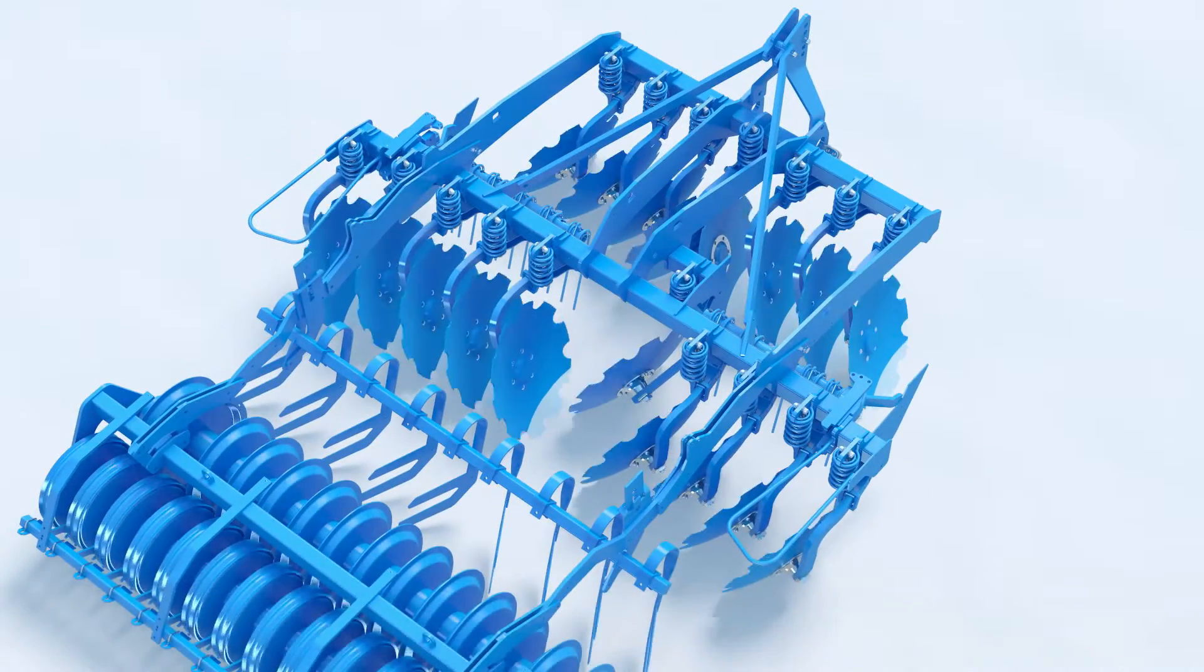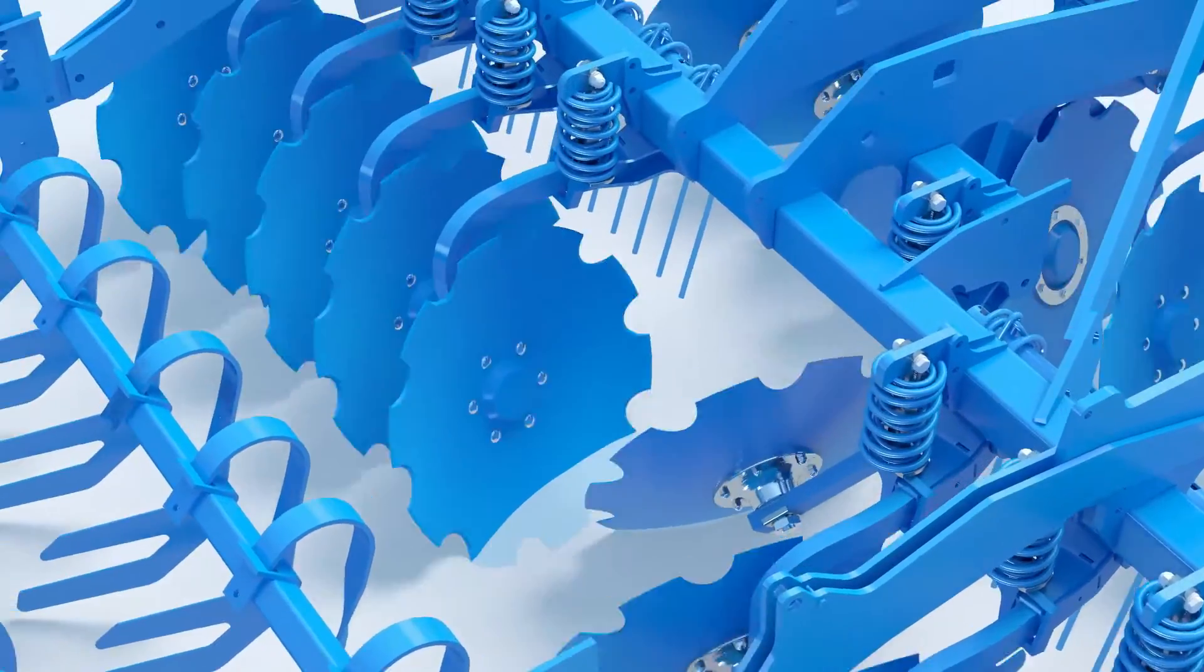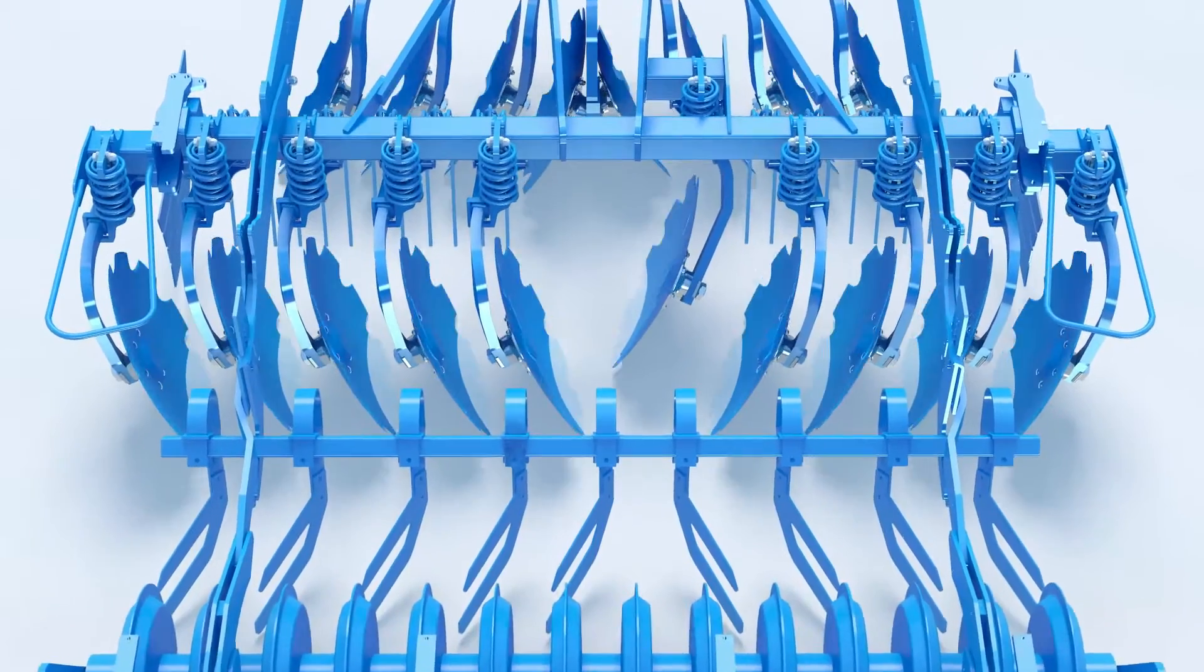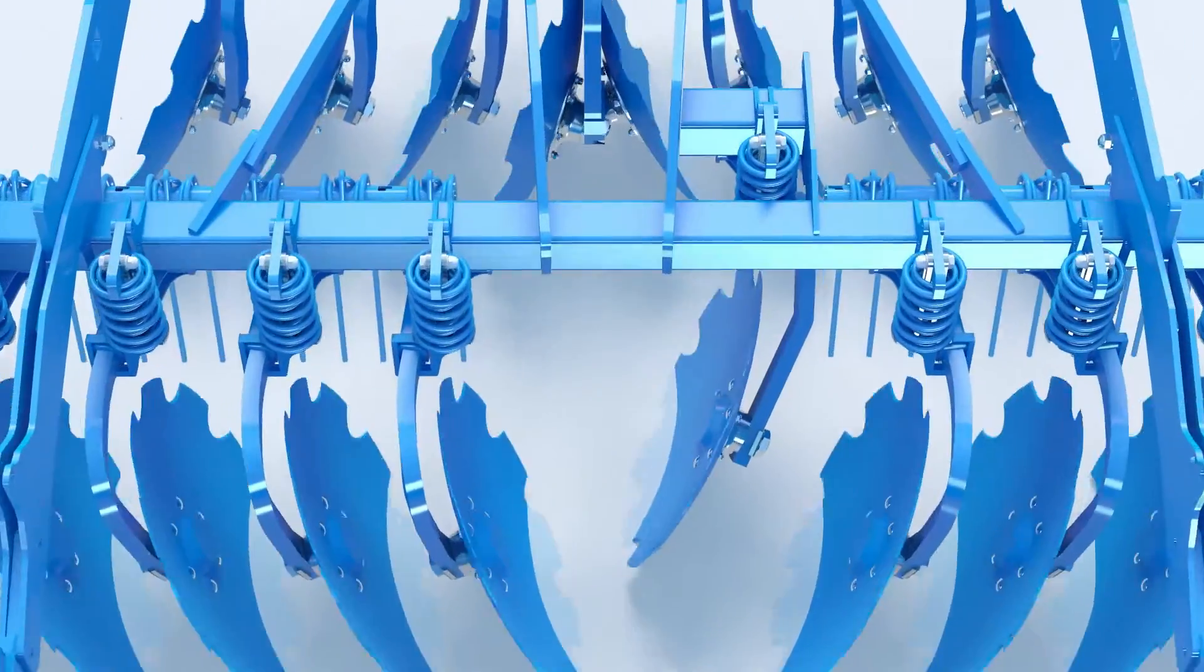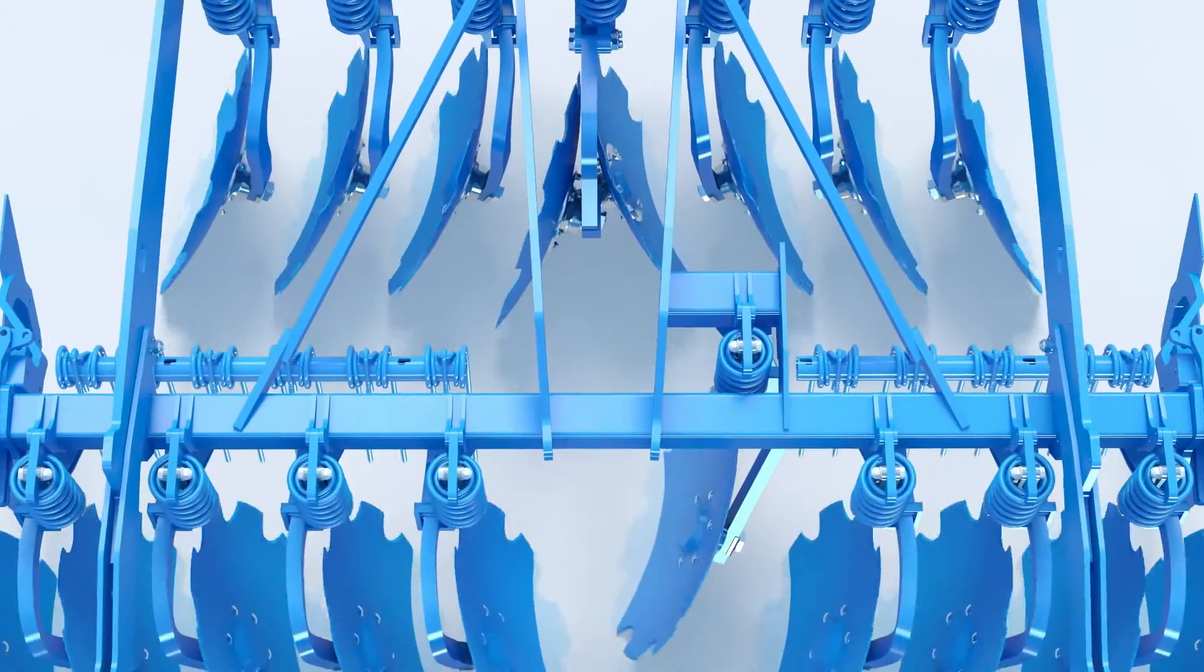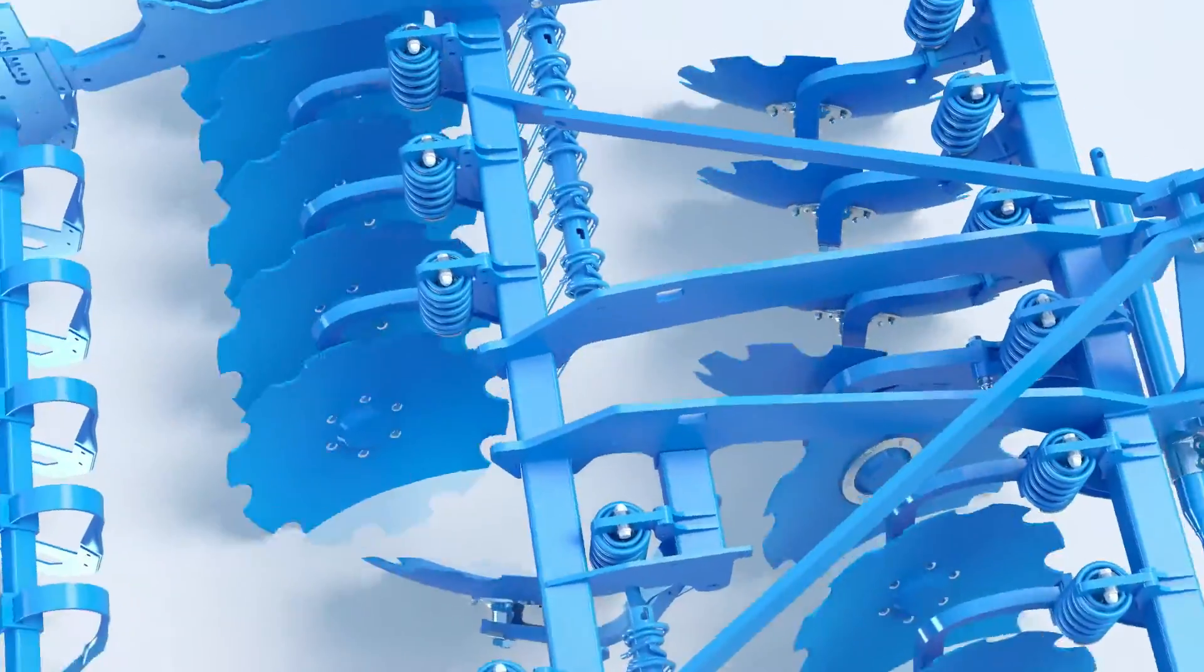The second row functions in a similar way. However, here, the concave sides of the discs face inward and they are also turned inward at a 14 degree angle. Consequently, the soil flows inward. The central discs of each row are staggered. The space created here prevents clogging.